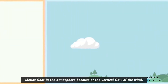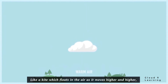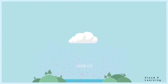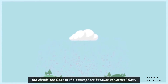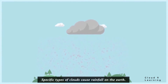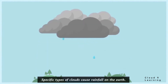Clouds float in the atmosphere because of the vertical flow of the wind — like a kite which floats in the air as it moves higher and higher. Clouds too float in the atmosphere because of vertical flow. Specific types of clouds cause rainfall on the earth.